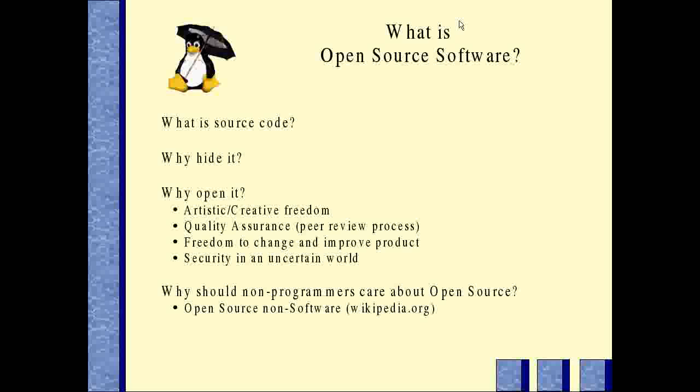Why open your source code? I think it's about artistic and creative freedom — it's almost a free speech issue. I like to see other people's software because that way I can check what algorithms have been used and verify that the software does what they say it does. It gives me a better way to look for errors when I can actually see the code, so it's a matter of quality assurance. It's also a matter of the freedom to change and improve the product — it's very frustrating to work on a closed source product when you know you could make it better but you're not allowed to.